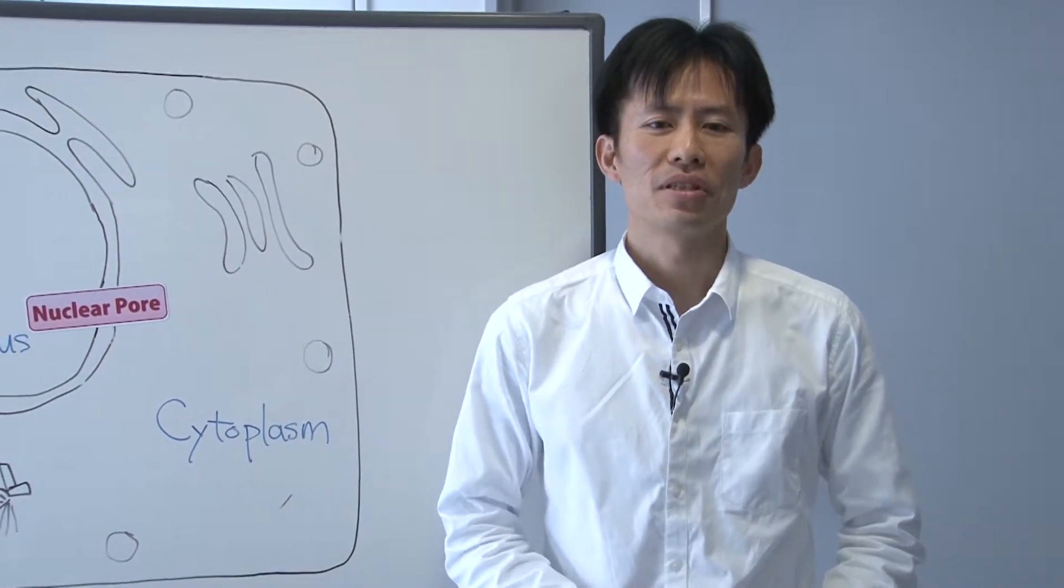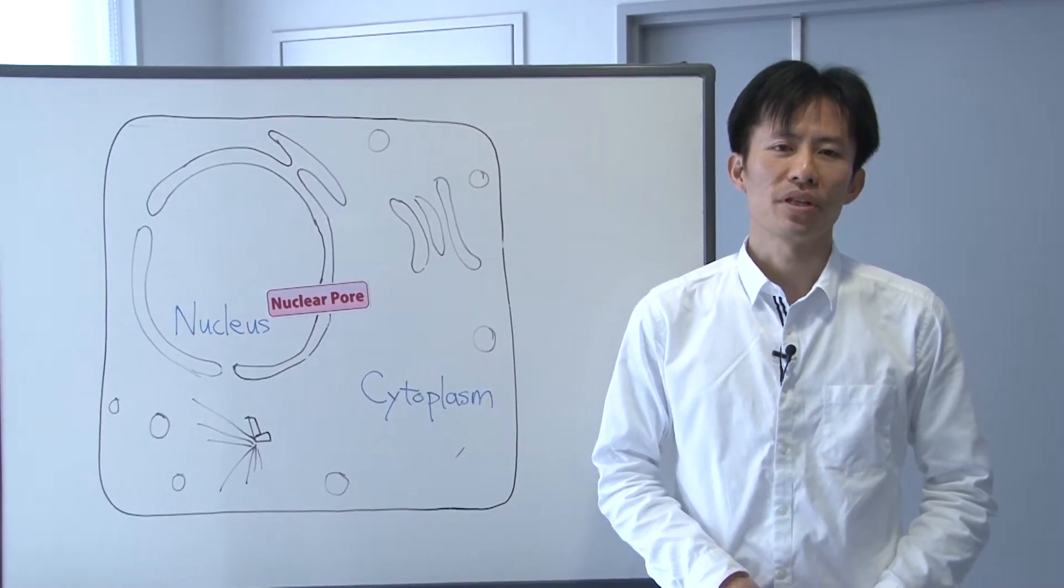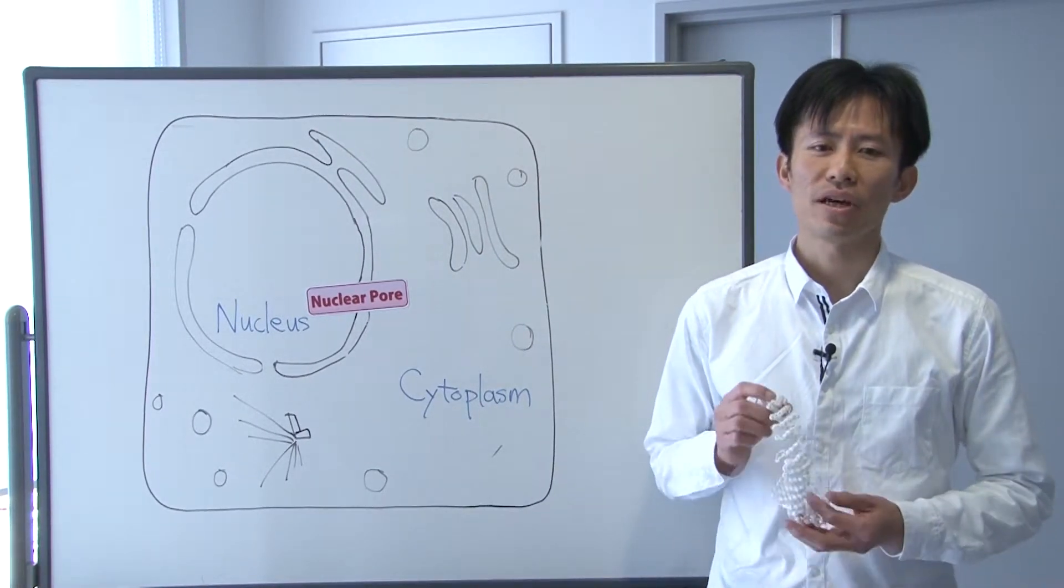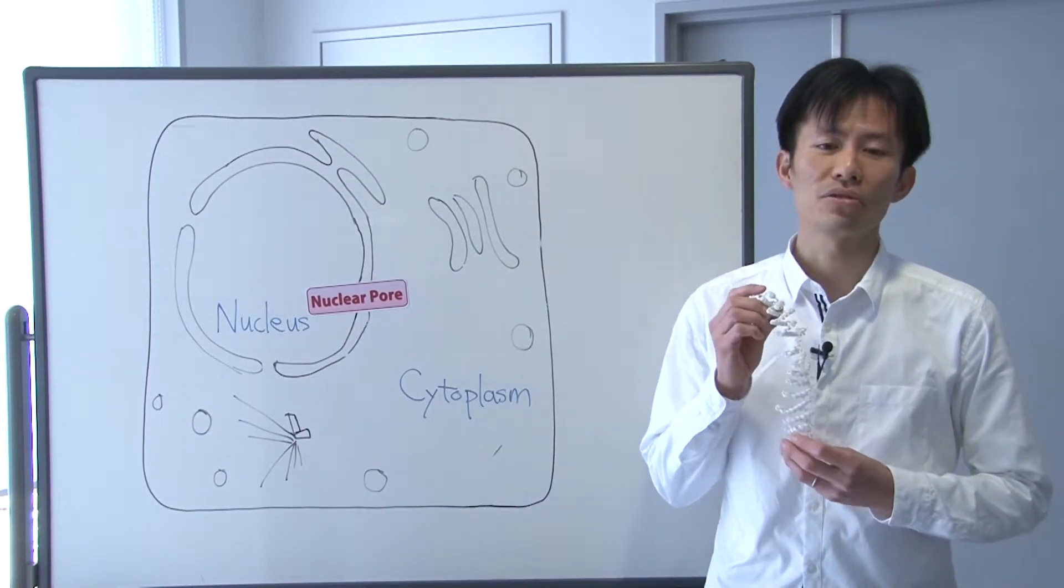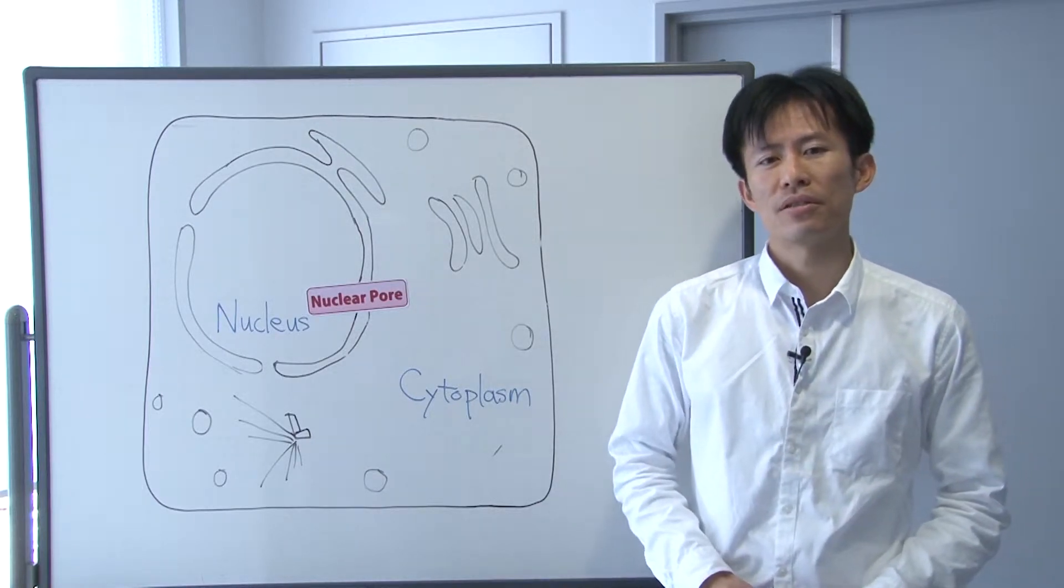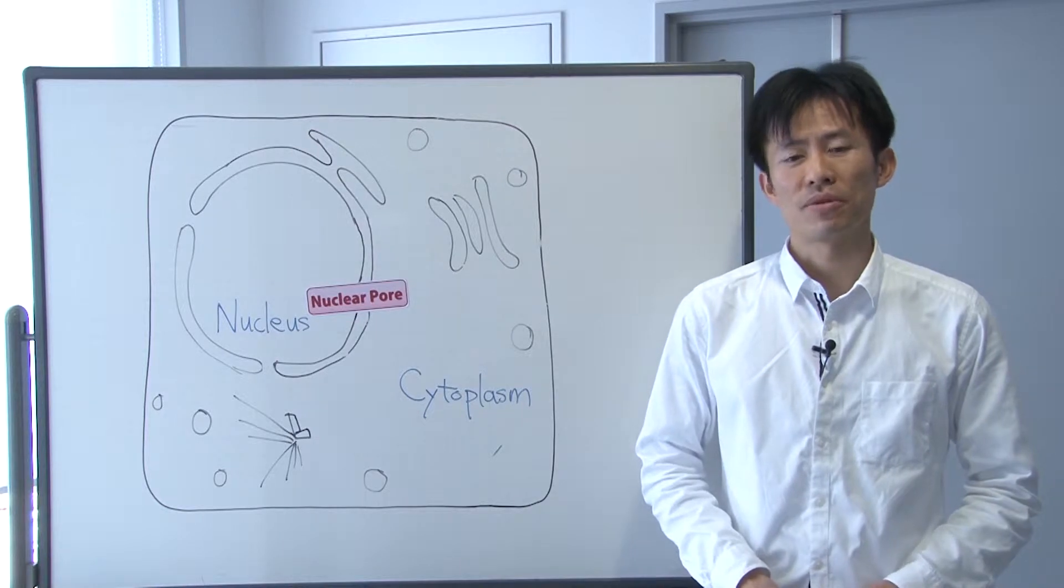You probably have seen a number of crystal structures of proteins. However, proteins are more or less fluctuating in liquid and also in a cell. The crystal structure that you see in the literature is just one of those thousands of conformations.